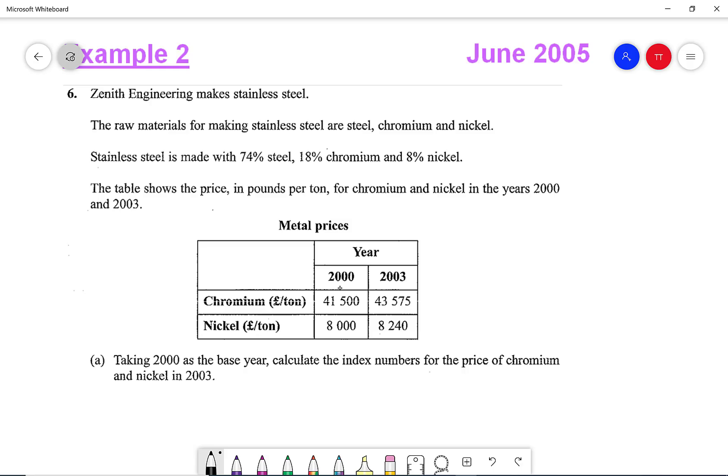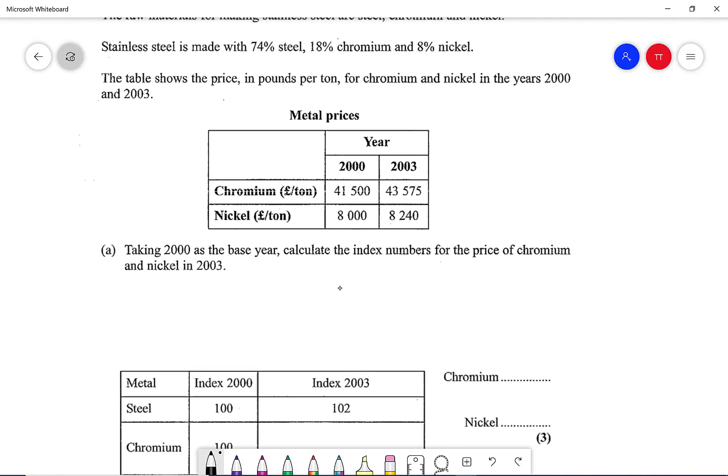Now it says, taking 2000 as the base year, calculate the index numbers for the price of chromium and nickel in 2003. So the formula for the index number is the current price divided by the base year price times that by 100.